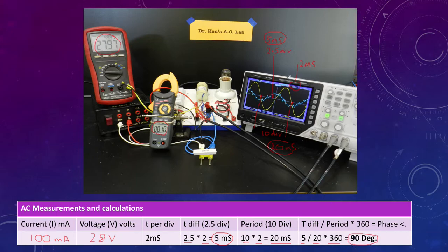So we have a difference of 2.5 milliseconds, which equates to 90 degree angle difference.